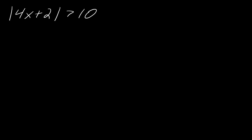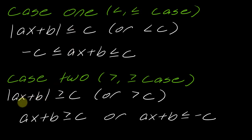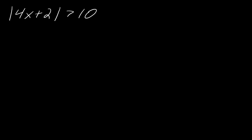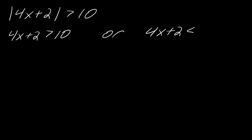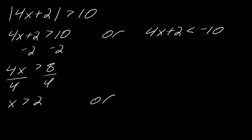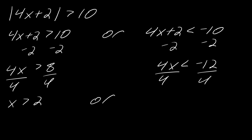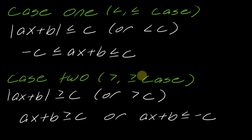Now for the absolute value of 4x plus 2 is greater than 10 — this is the greater-than case, so we use the 'or' setup. It becomes: 4x plus 2 is greater than 10, or 4x plus 2 is less than negative 10. Solving the first: subtract 2, get 4x greater than 8, divide by 4 — x is greater than 2. For the second: subtract 2, get 4x less than negative 12, divide by 4 — x is less than negative 3.